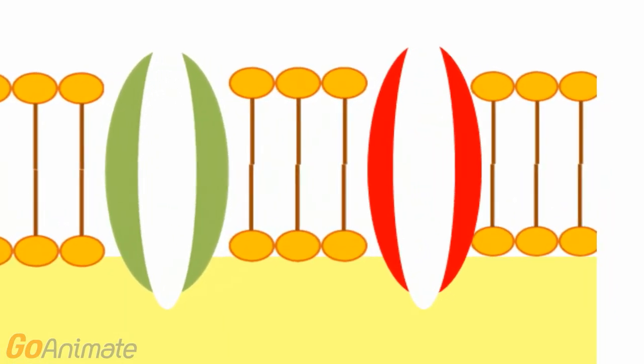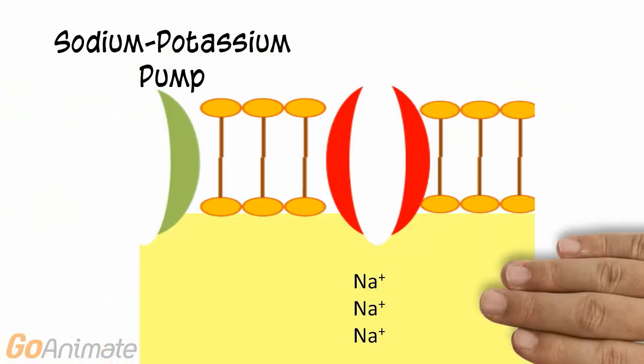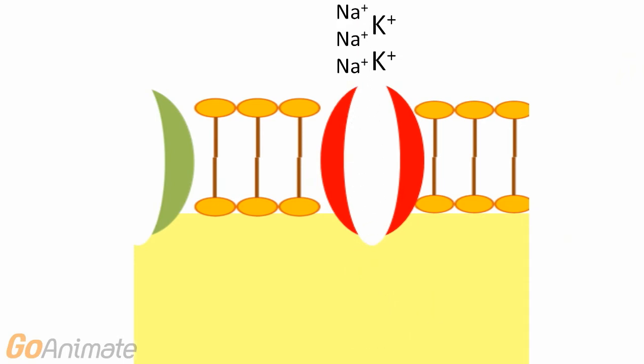The sodium and potassium gradients are both maintained by the sodium-potassium pump. This active transport protein moves three sodium ions out of the cell and two potassium ions into the cell. Sodium and potassium are moved against their respective gradients by the pump using ATP for energy.